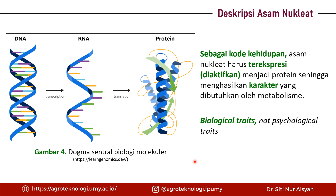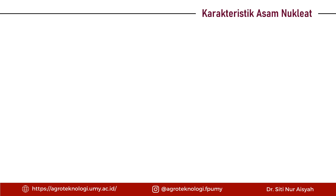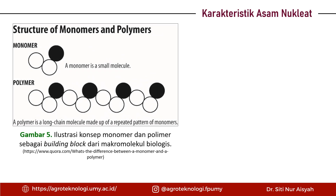Dogma sentral ini tidak hanya berlaku pada manusia saja, tapi juga berlaku pada tumbuhan maupun prokaryot seperti jamur, bakteri, virus, dan lain-lain. Sekarang kita bahas karakteristik dari asam nukleat. Asam nukleat memiliki struktur monomer dan juga polimer, seperti halnya makromolekul yang lain seperti protein, karbohidrat, dan lain-lain.